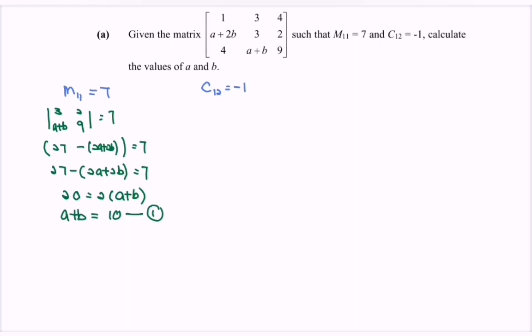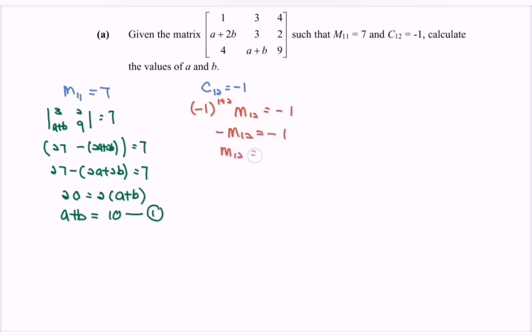Secondly, for C12, as we know, C12 equals negative 1 times bracket 1 plus 2, times M12, equals to negative 1. So from here, negative M12 equals to negative 1, therefore M12 equals to 1.